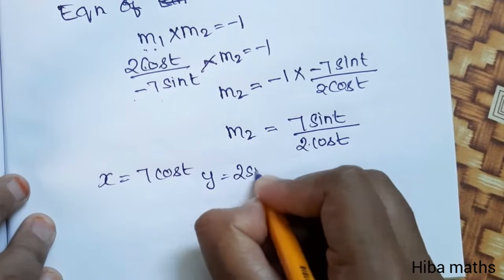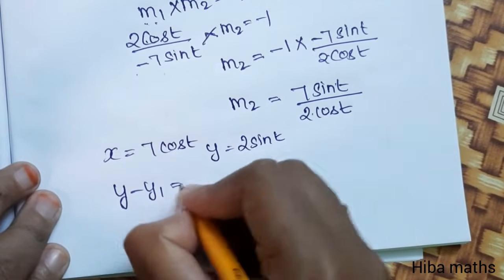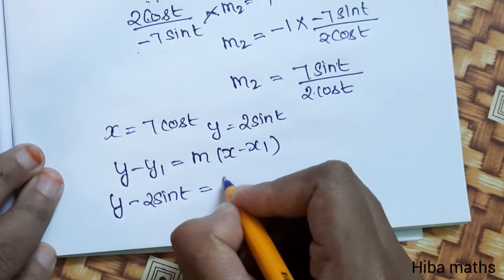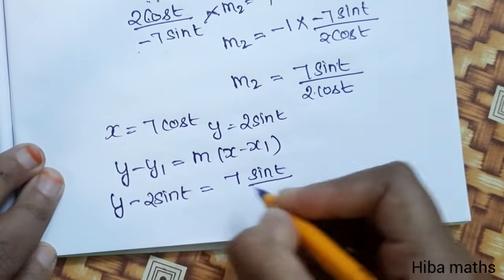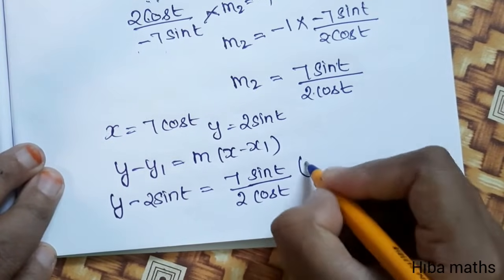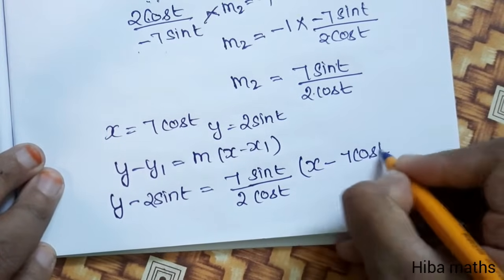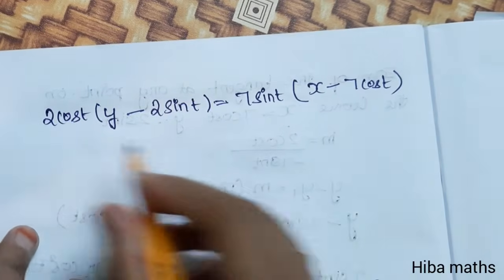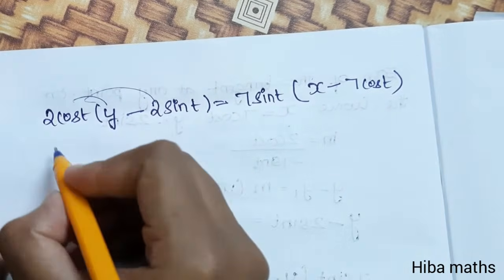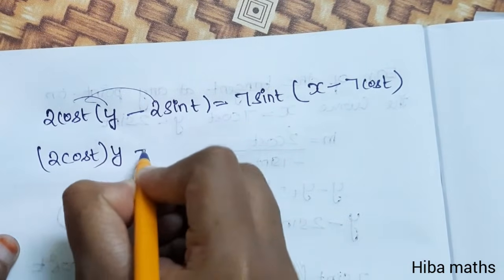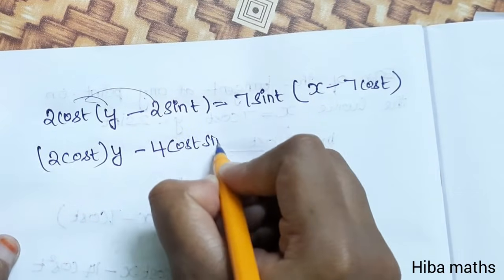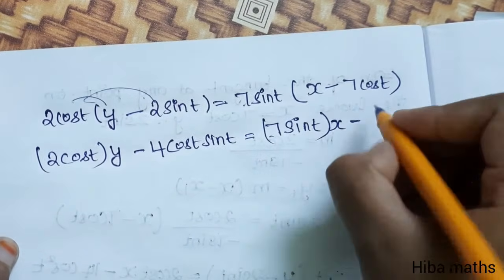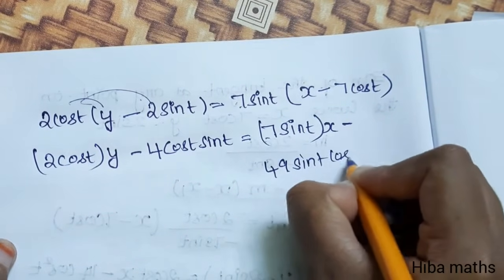The point is the same: x equals 7 cos t, y equals 2 sin t. Using y minus y1 equals m into x minus x1: y minus 2 sin t equals 7 sin t over 2 cos t, into x minus 7 cos t. Multiplying through by 2 cos t, we expand the terms.